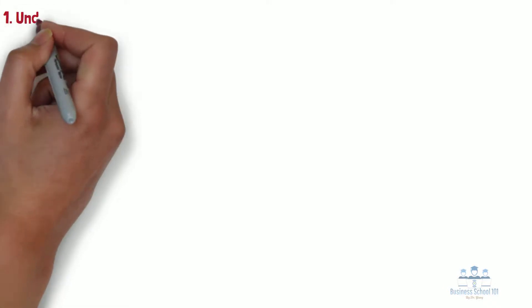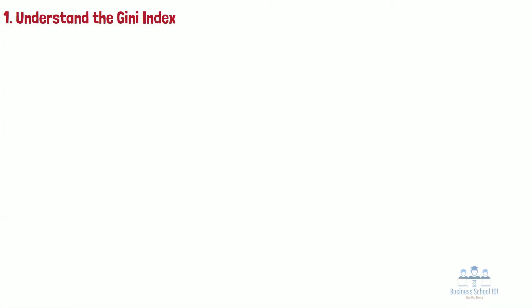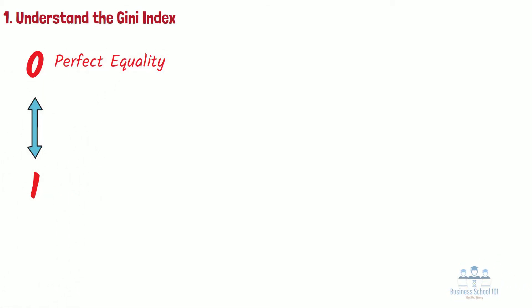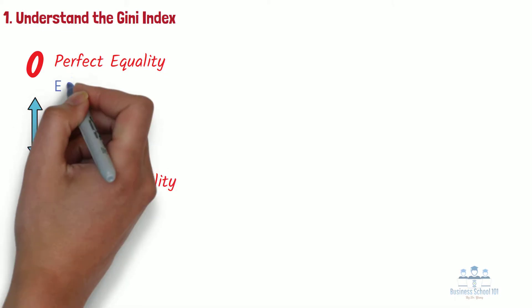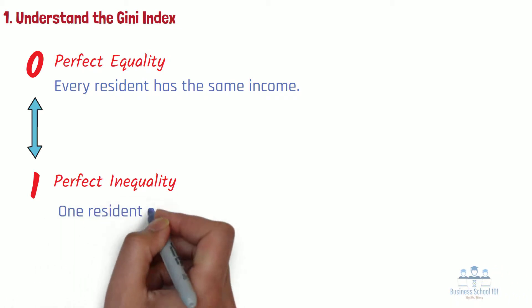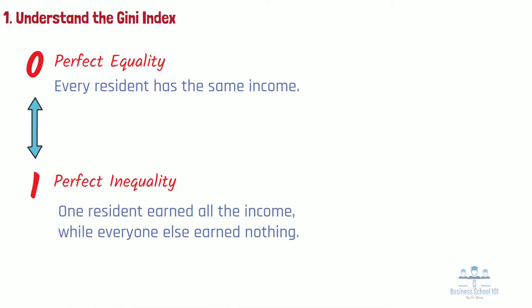Section 1: Understand the Gini index. The Gini coefficient ranges from 0 to 1, with 0 representing perfect equality and 1 representing perfect inequality. A country in which every resident has the same income would have an income Gini coefficient of 0. Conversely, a country in which one resident earned all the income while everyone else earned nothing would have an income Gini coefficient of 1.